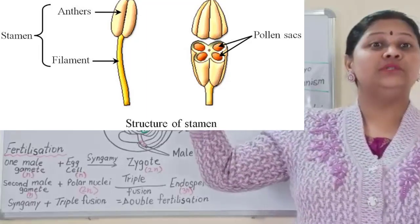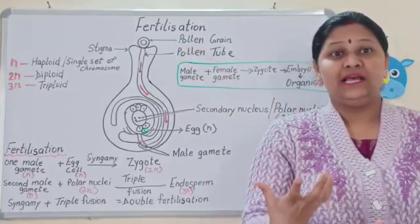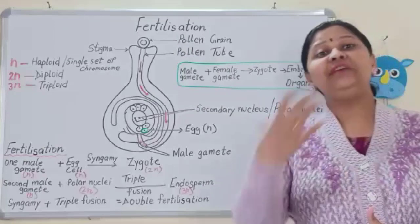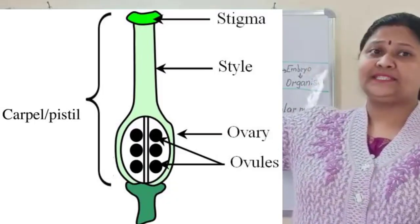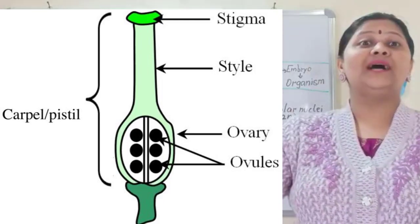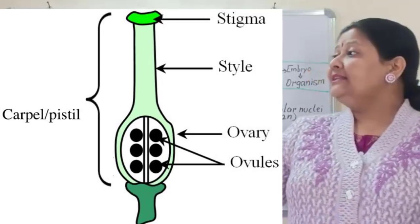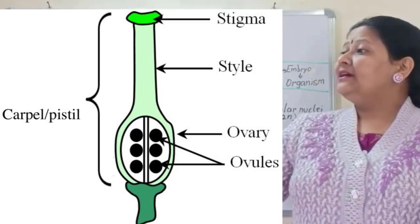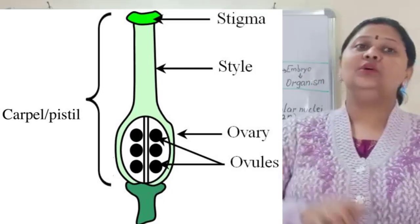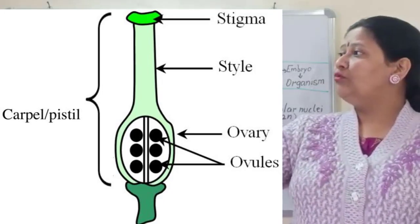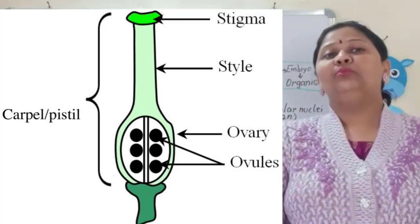Now coming to the fourth whorl, that is gynoecium. Gynoecium comprises one or more pistils. Pistil is the female part. Look at the structure of pistil — the upper part is stigma, then style, and the swollen part is ovary. Inside the ovary, one or more ovules are enclosed. So: stigma, style, ovary, and inside the ovary is the ovule.